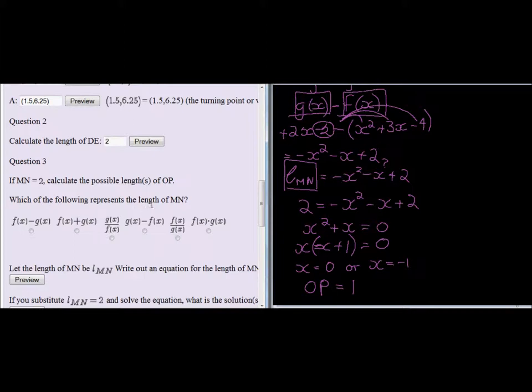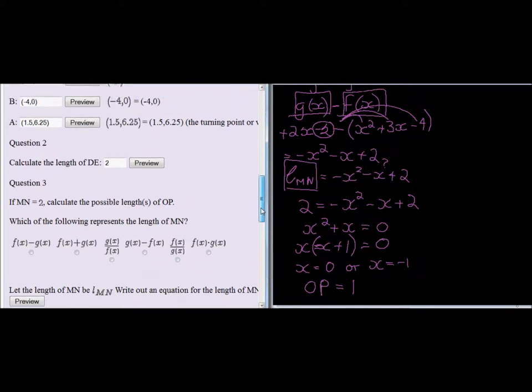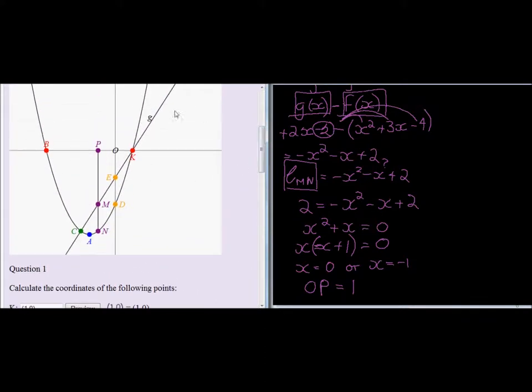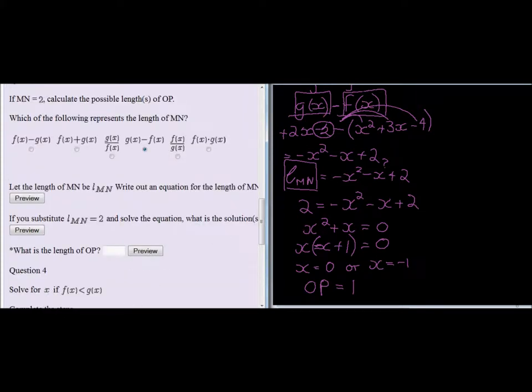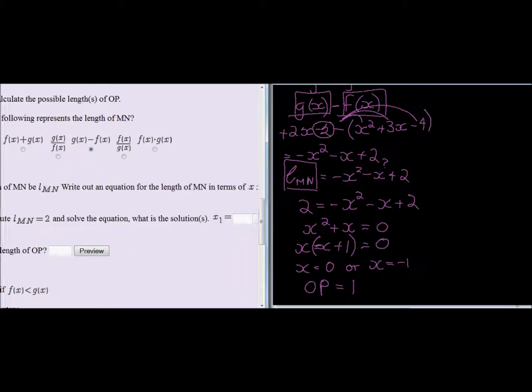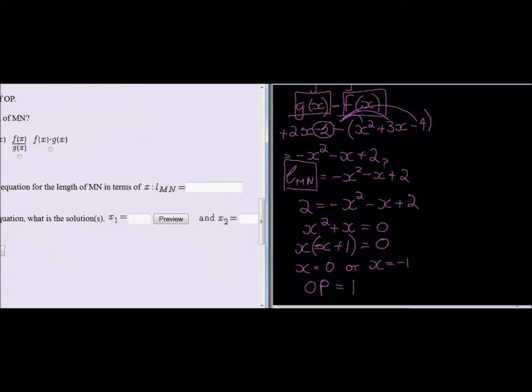Let's just put in our answers. Looking at the questions: which of the following represents the length of MN? Well, we saw that the graph of M is higher than the graph of F, so it would be G minus F. So G minus F, that gives me the distance. Let the length of MN be LM. Write out an equation for the length MN in terms of x. That is what we calculated here - that is an equation of the length of MN in terms of x. So it's minus x squared, negative x plus 2.